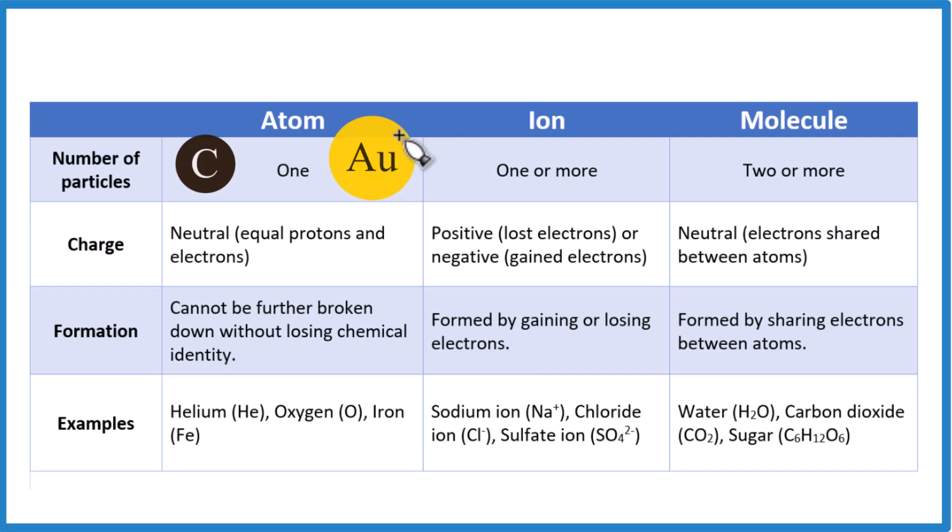They don't have a charge, so you won't see a negative or a positive sign after atoms. They're neutral. The number of electrons and protons are equal there. And you can't break them down any further, or it's not the atom. If you broke this down further, it wouldn't be an atom of gold. It'd just be protons, electrons, and neutrons.